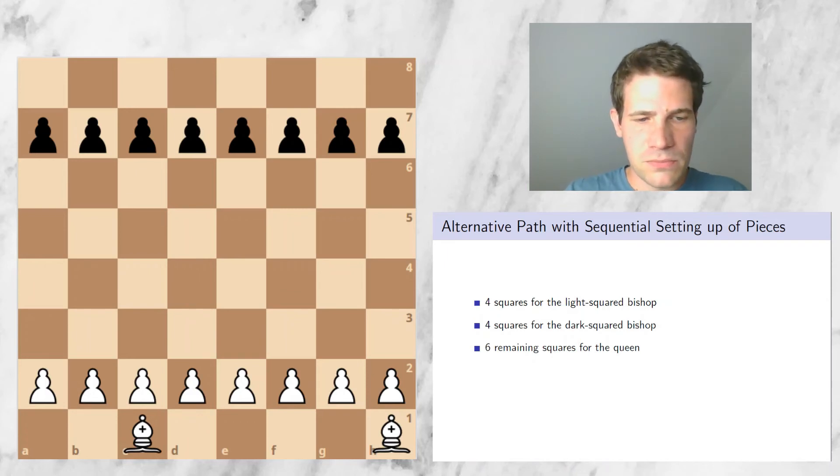Next, let's consider the queen. This is relatively simple. We have six squares left and we have to put the queen on one of these six squares. Let's suppose we put it on F1 for illustration sake. The number of starting positions again increases by factor six.